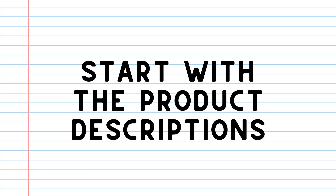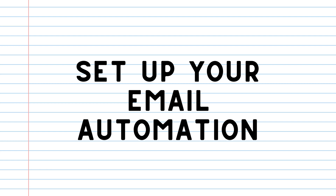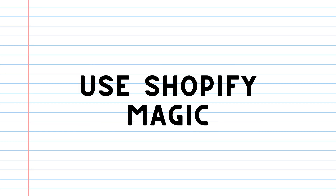Action plan: start with the product descriptions, implement the image optimization, set up your email automations through Shopify Email using Shopify Magic to generate all the text. And as a bonus, if you have Sidekick enabled — use it now.